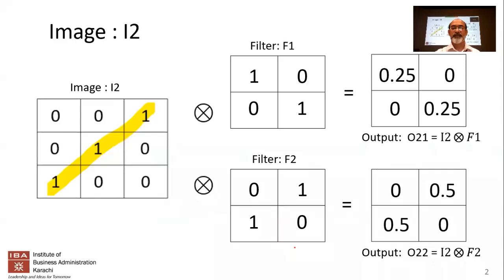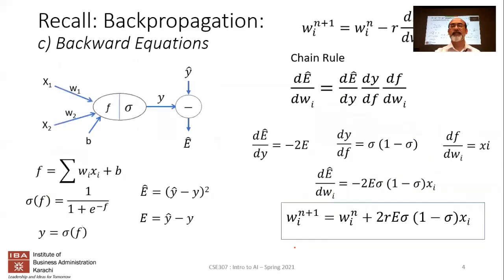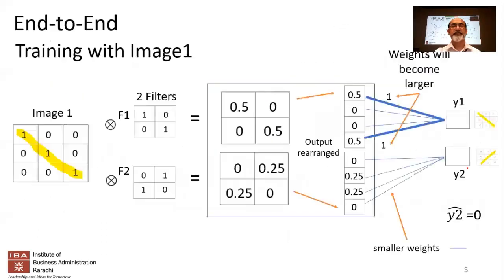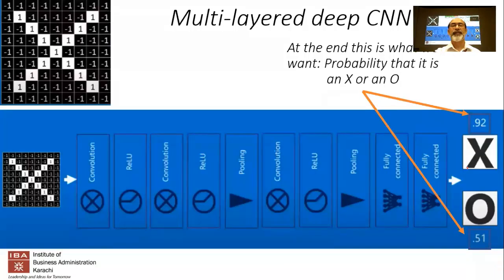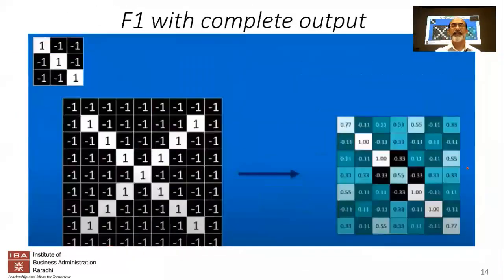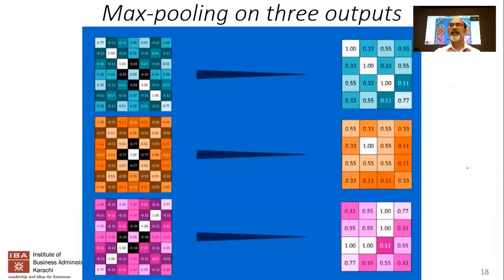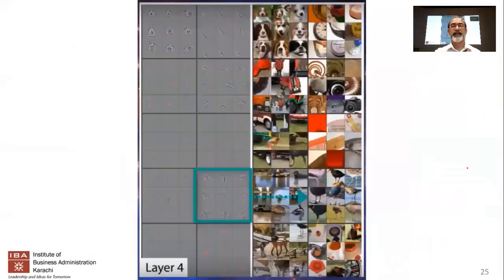This is a review of the previous lecture where we spoke about being able to classify images into one of two categories. We looked at Y1 and Y2 predicting the probability of whether an image was of one type or the other. We looked at back propagation, the example of classifying an X or an O using filters, and an end-to-end CNN network applying convolution, max pooling, and the activation function.